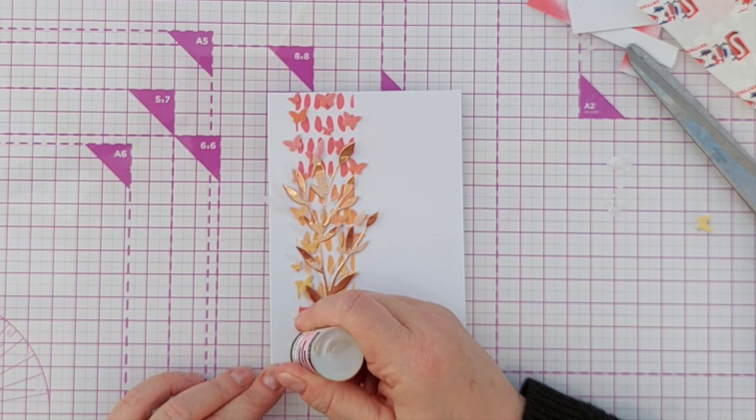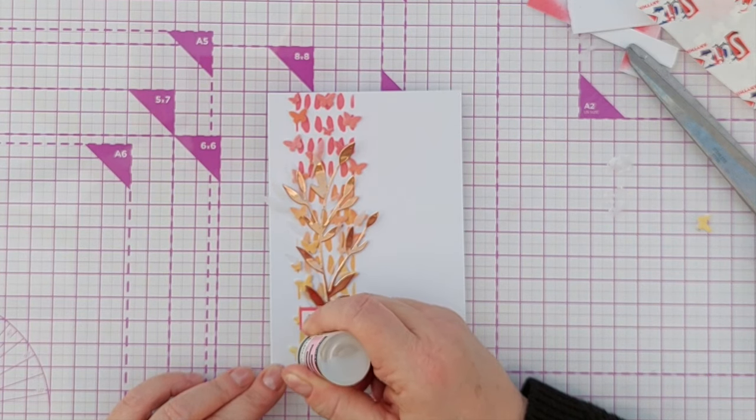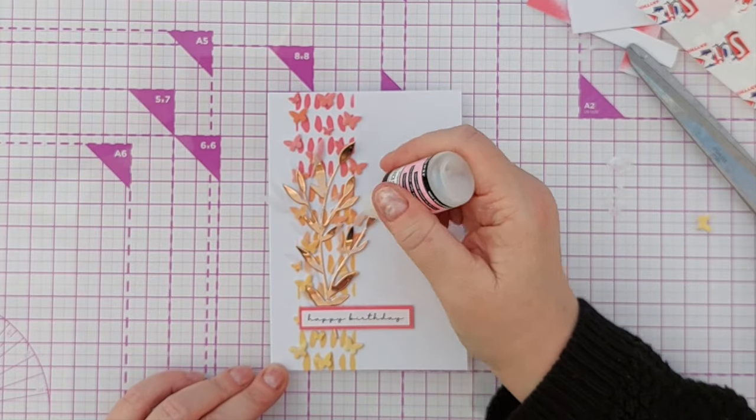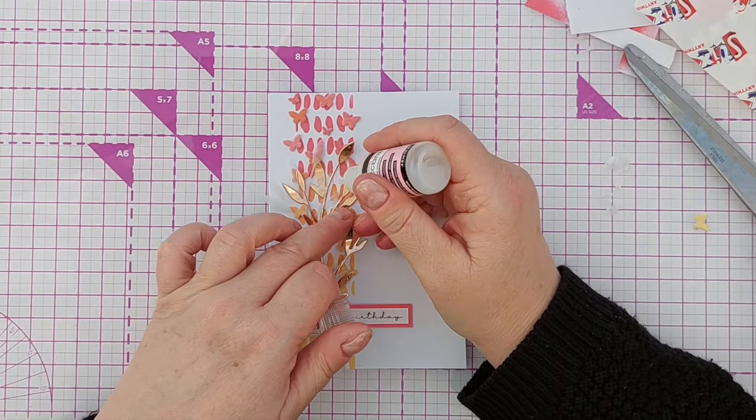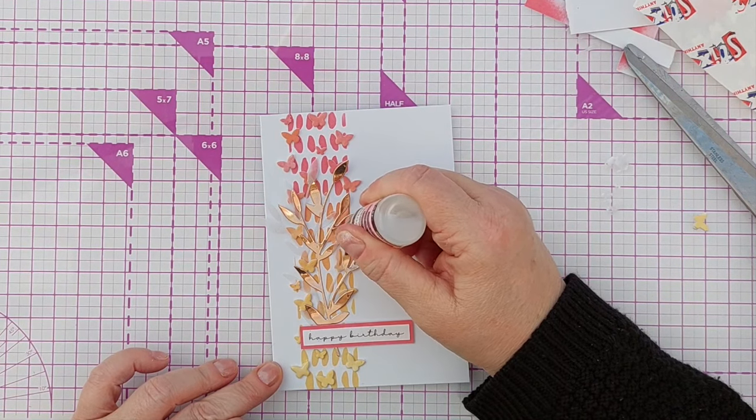And as a finishing touch I added glossy accents to just a few of the butterflies. This was just to add a bit of shine but also to create a little bit of variation so not all the butterflies were looking the same.